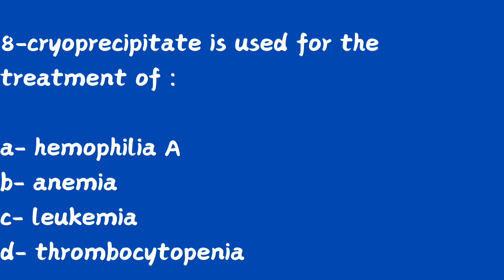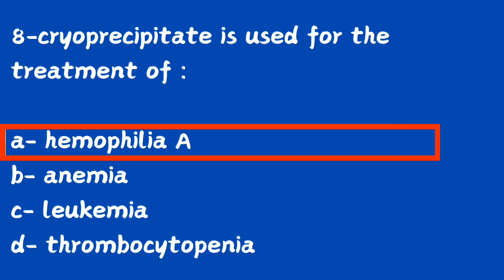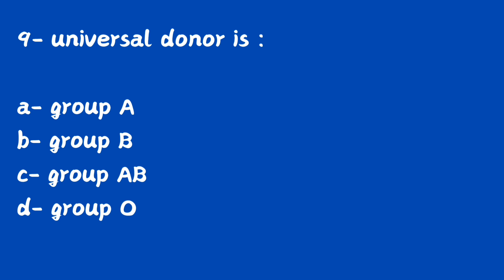Question number 8. Cryoprecipitate is used for the treatment of: option A, hemophilia A; option B, anemia; option C, leukemia; option D, other. In which condition is cryoprecipitate used? The right answer is option A, hemophilia A. Cryoprecipitate is used for the treatment of hemophilia A.